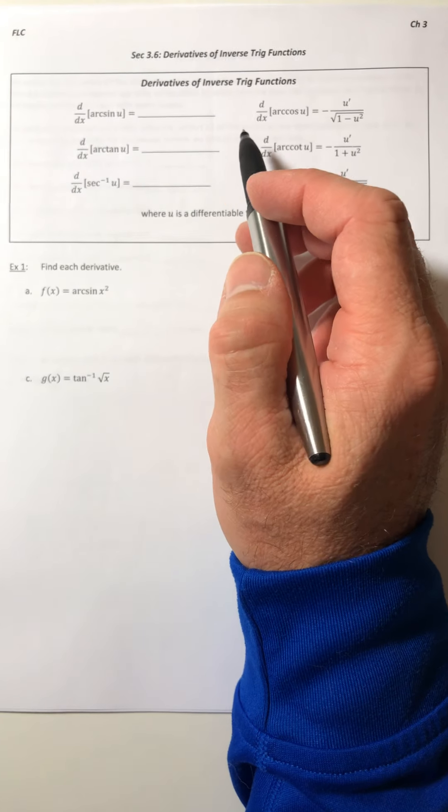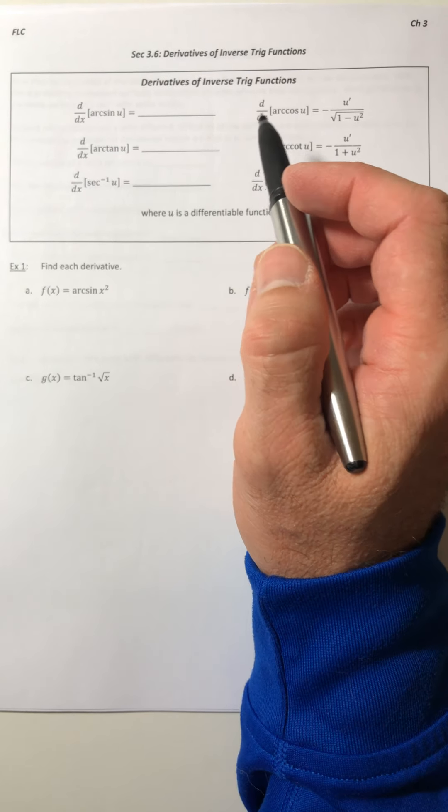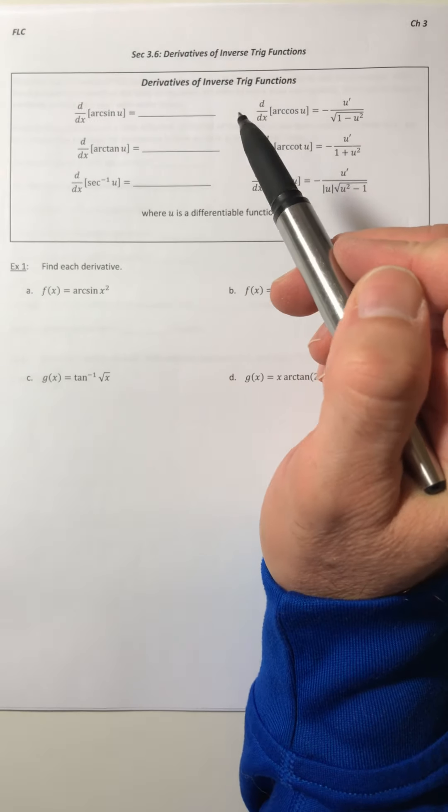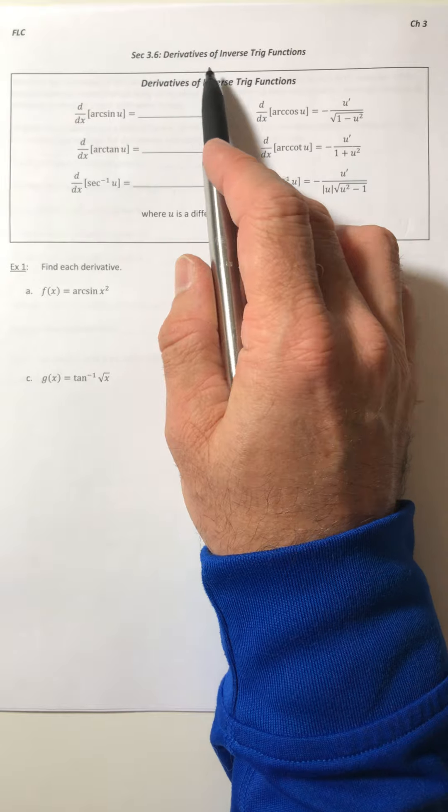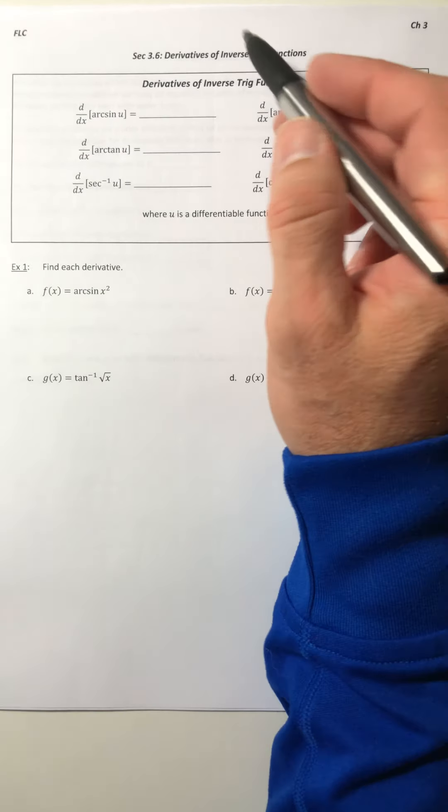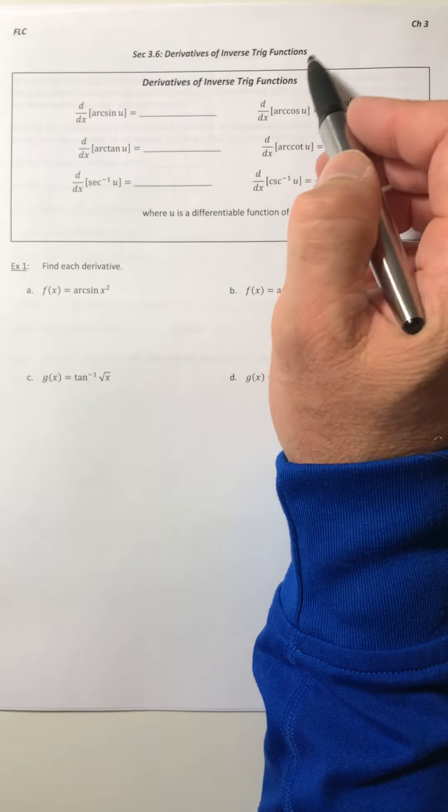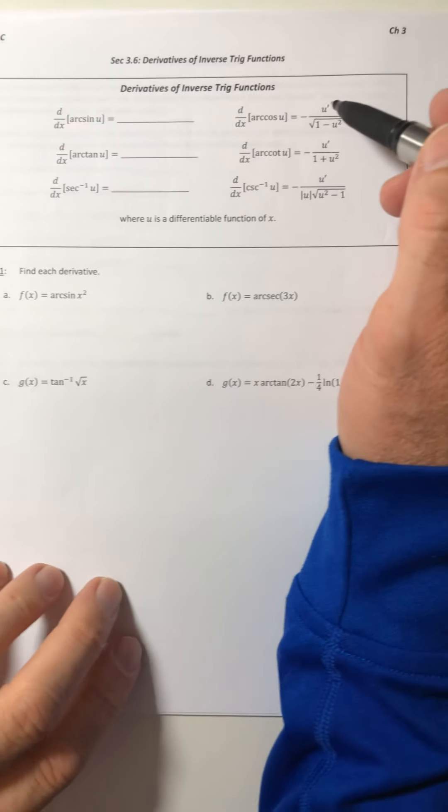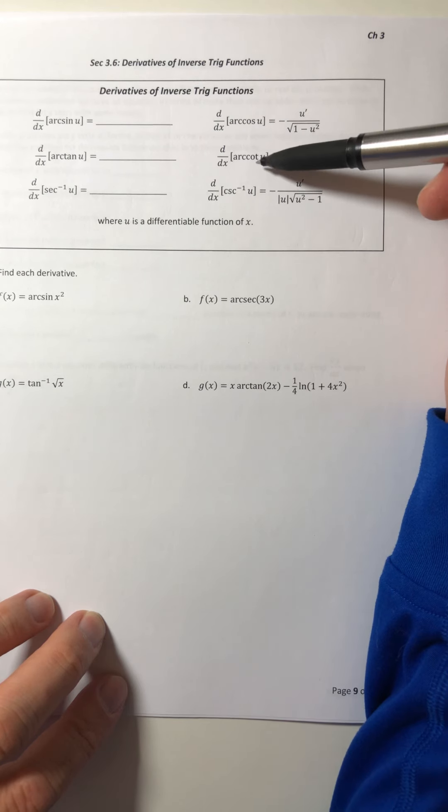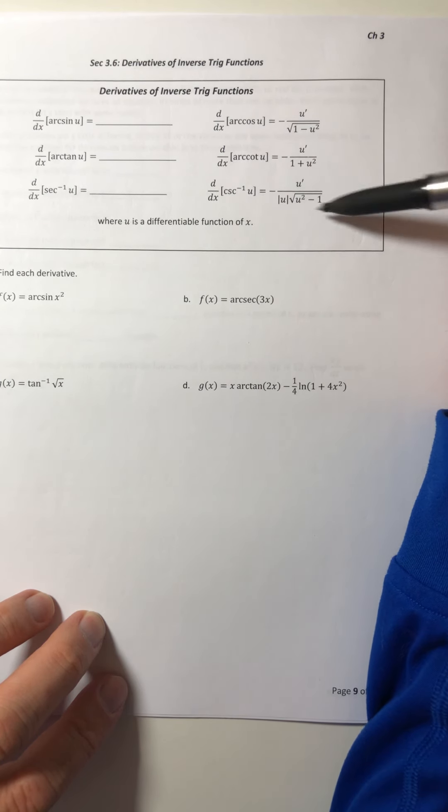Okay, welcome to section 3.6. So we have one last type of function to talk about for derivatives, and those are the inverse trig functions. The other functions have all been taken care of except for these. So I wrote out or typed out the ones for inverse cosine, cotangent, and cosecant. Those are right here.